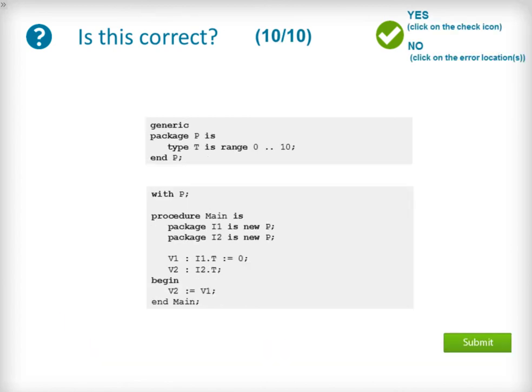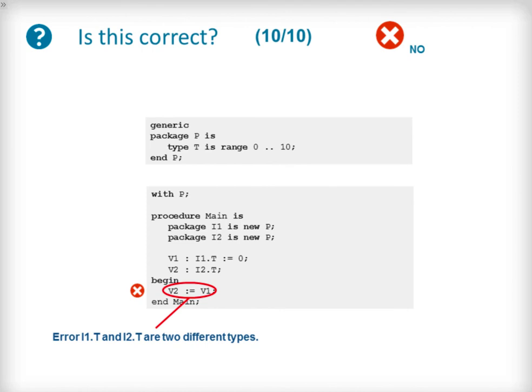Our last question presents a generic package with no generic parameters but publicly declares a new type T with a range 0 through to 10. The main procedure makes two instantiations of P with the names I1 and I2 and then creates two stack objects using the exposed type T from package I1 and I2. One of the objects is then assigned to the other. This code is faulty and will fail to compile — I1.T and I2.T are completely different distinct types and are not compatible with each other. In order to perform this assignment a type conversion would be required.